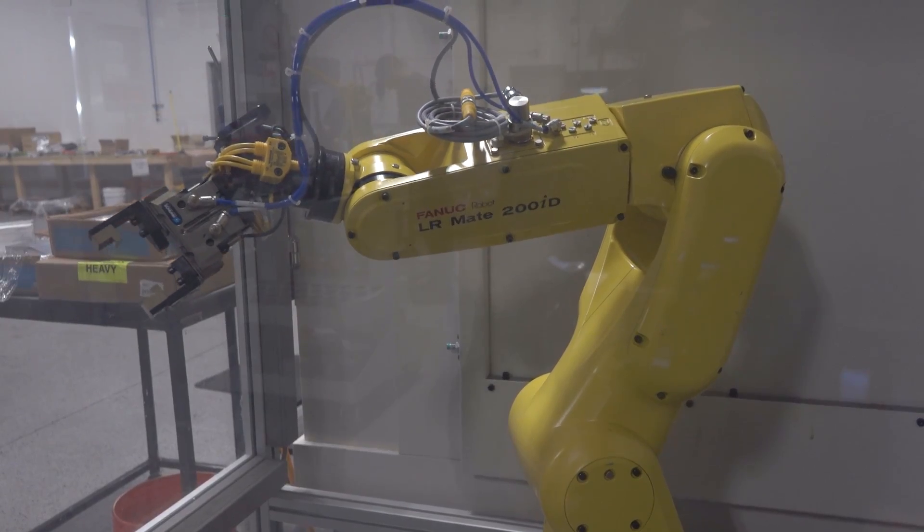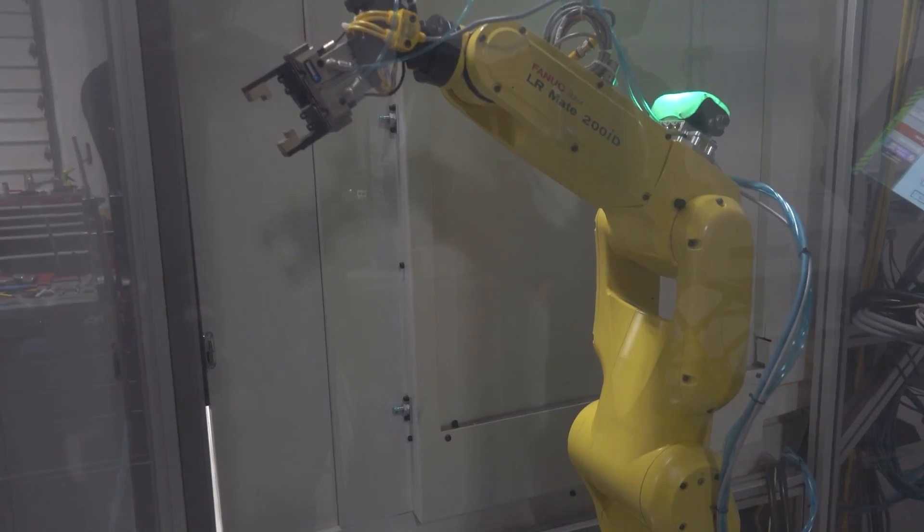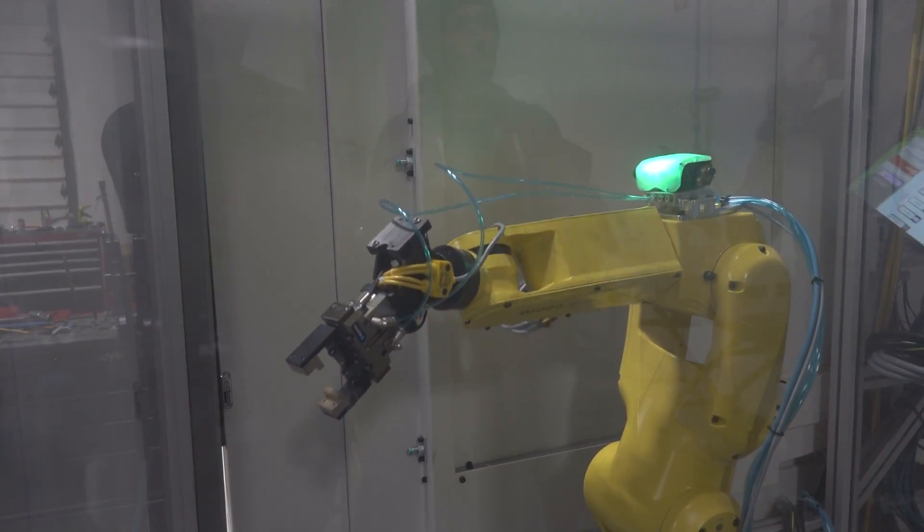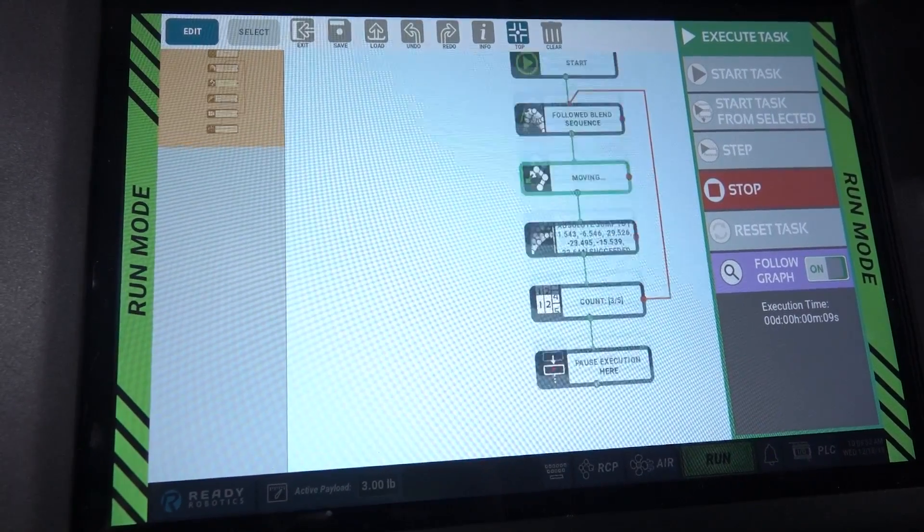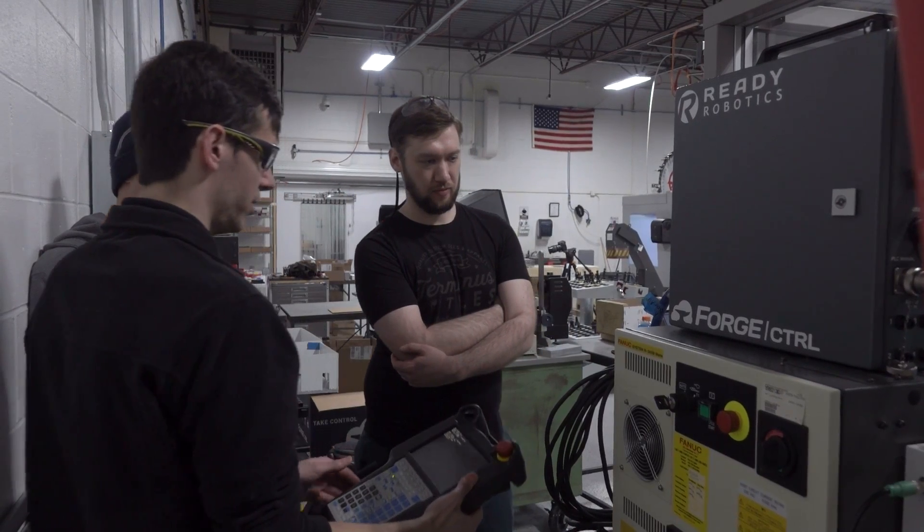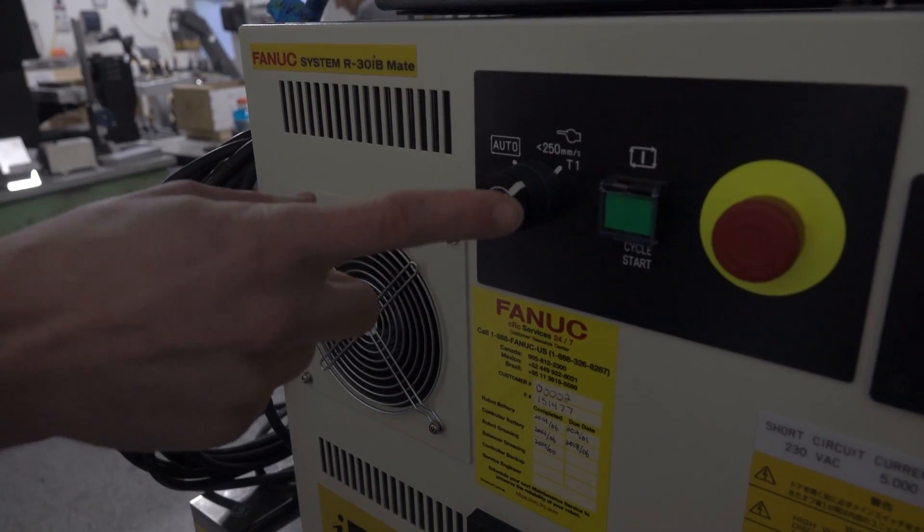So we teamed up with Ready Robotics, a fairly local company who provide a very easy-to-use touchscreen interface retrofit controls that sit on top of the original robot control. With that, we were easily able to visually program through all of the waypoints and steps and get the robot loading, flipping parts for OP2 and unloading finished parts into the part drawer.